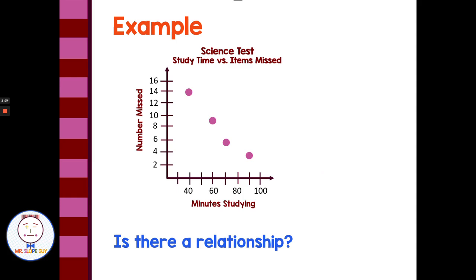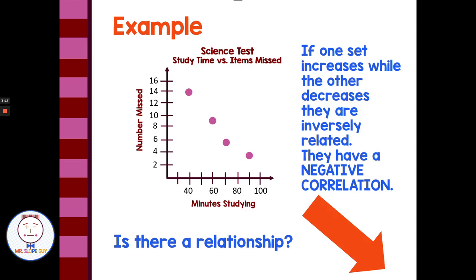For example, we have a science test with study time versus items missed. We're looking at minutes studying along the x-axis and number of questions missed on a science test along the y-axis. A person that studied 40 minutes missed 14 questions, 60 minutes missed about 9, 70 minutes missed 5, and 90 minutes missed 3. As the number of minutes studying increased, the number of questions missed decreased — one variable went up while the other went down. This forms almost a perfectly straight line, which makes it great to predict with.